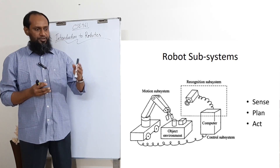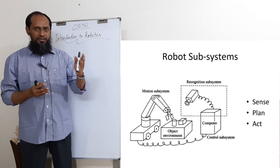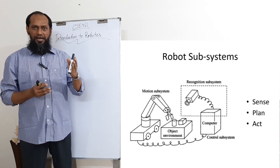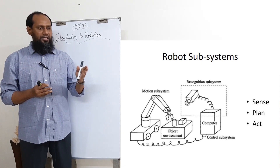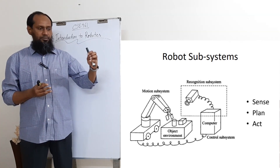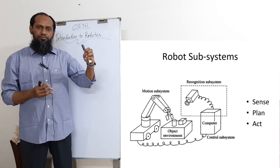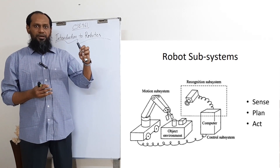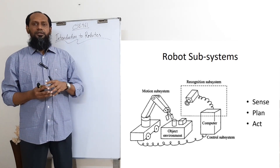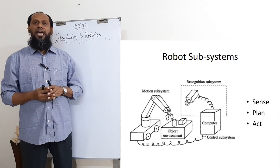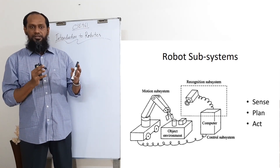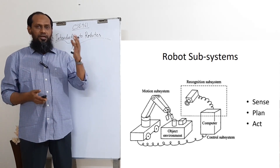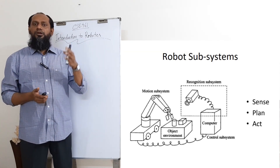That decision is made by the computer, which is Plan. Then a robotic arm is picking some object or doing some activities, which represents Act. So there are three main subsystems.